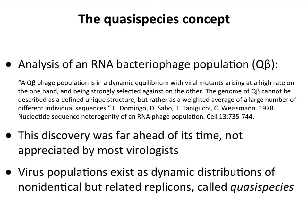If we had a battle between an RNA virus and a DNA virus, we know who would win. Now let's talk about quasispecies — a name that came into the literature in 1978.